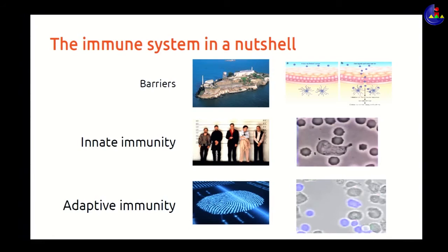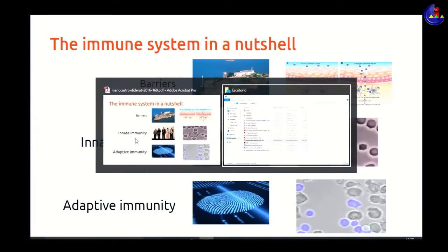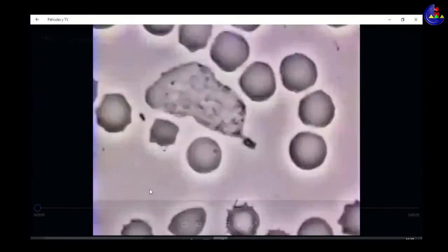Let me talk about a couple of examples focused on immunology specifically. Immunology is a really complex system involving three levels. The first level is barriers — mucosa or the skin — which prevent pathogens in a simple way, shared with all living things. The second level is innate immunity: mechanisms that protect against common suspects like bacteria or parasites. Let me show you a video of this immune system at work.